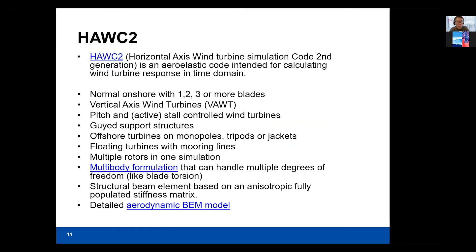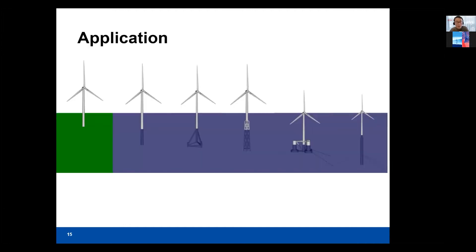HAWC2 is a well-known aeroelastic tool that is very suitable for calculating wind turbine responses in the time domain. It can be used to simulate various types of wind turbines and their support structures. It uses a multi-body formulation, which gives it flexibility when modeling complex structures. There are several application examples available on the HAWC2 website. To simulate installation of single blades, we also applied HAWC2 to simulate the blade lifting system.